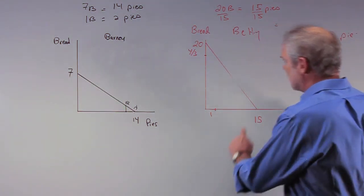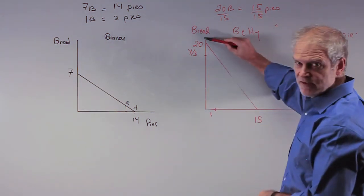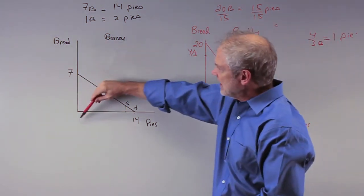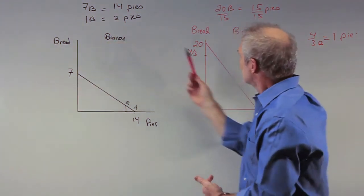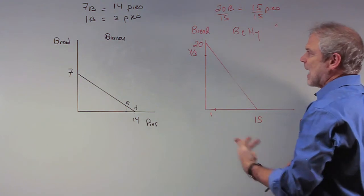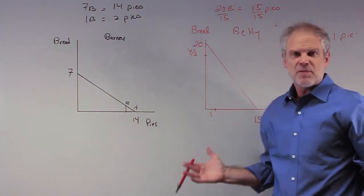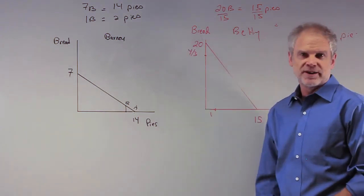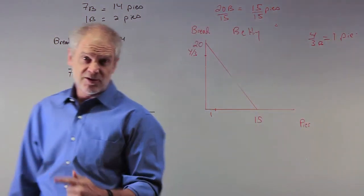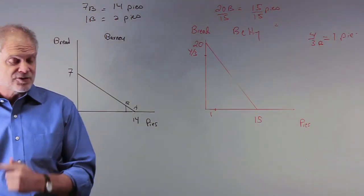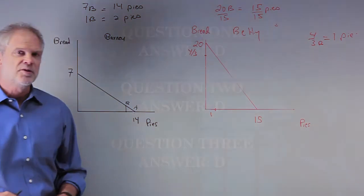In one hour Betty can produce 15 pies to Barney's 14, and 20 loaves of bread to Barney's 7 — so Betty has an absolute advantage in both bread and pies. So why would she ever bother trading with Barney? This is where we're going with comparative advantage: she should trade with Barney and can make herself better off, even though she has an absolute advantage in both goods.